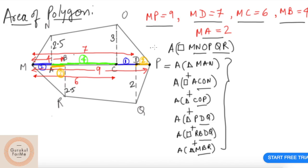Now we know how to calculate the area of this polygon by adding various areas. What is the area of MAN? That is half into base. What is the base here? MA, it's 2 into what is height 2.5.